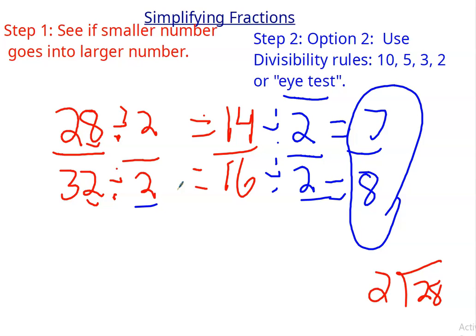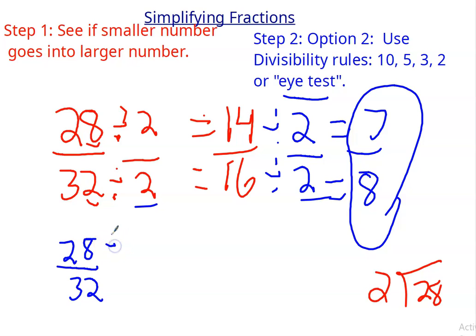Well, what I could have used in the first place was 4. It doesn't matter if you pick it up the first time or not. But if you do see something greater than the rule, then you should use it. So 28 divided by 4 and 32 divided by 4.